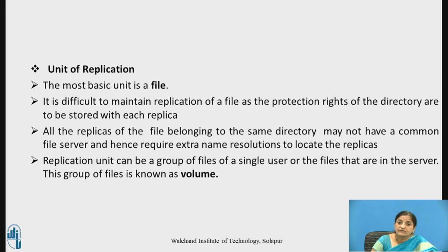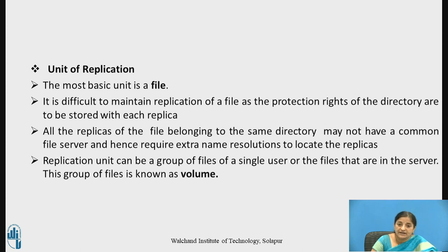The most basic unit of replication is a file itself. It is difficult to maintain file-level replication because the protection rights of the directory must be stored with each replica of the file. All replicas of the file belonging to the same directory may not share a common file server — they may reside on different file servers — hence requiring extra efforts for name resolution to locate all the replicas.